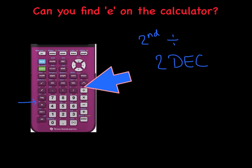Let's practice punching these in and gaining some confidence with the calculator. We'll go two decimal places for all our answers. First and foremost, let's try the square root of E cubed. Try typing that in and see if you got the same thing I did rounded to two decimal places. On my calculator, I got 4.48.